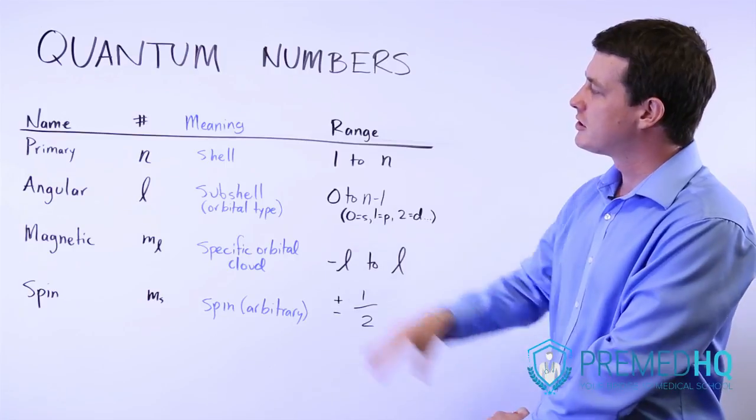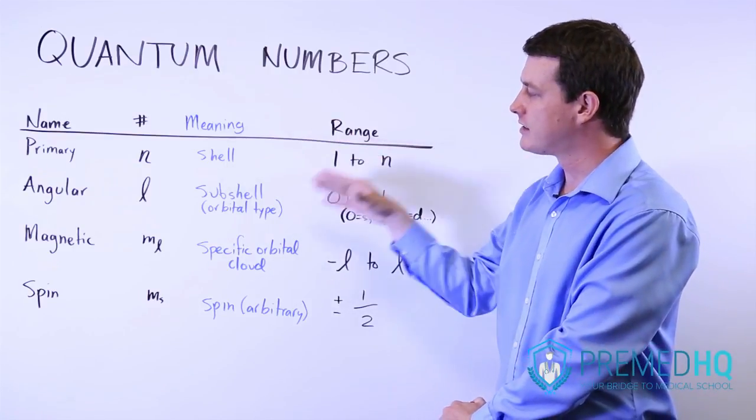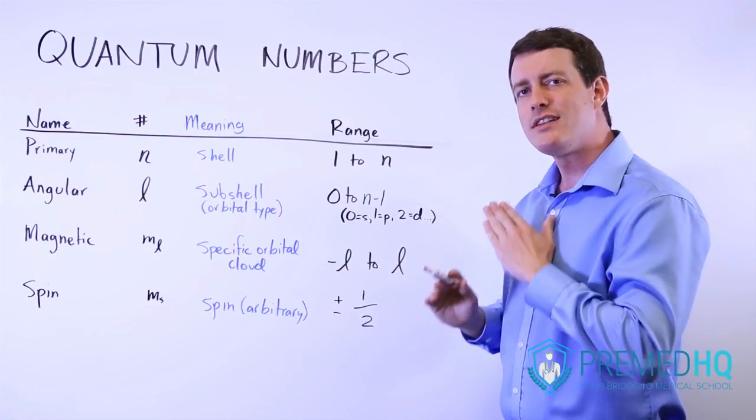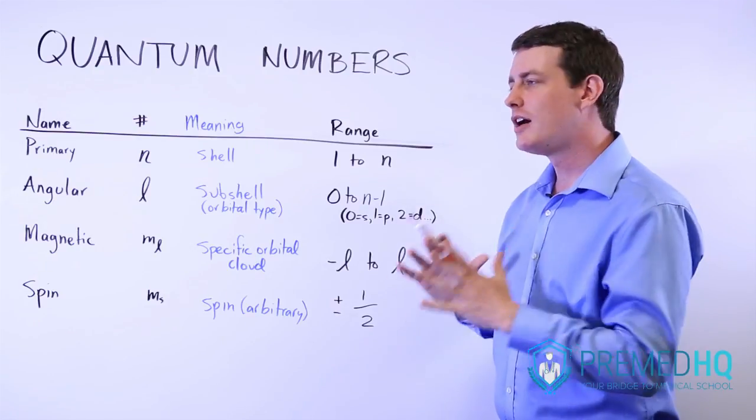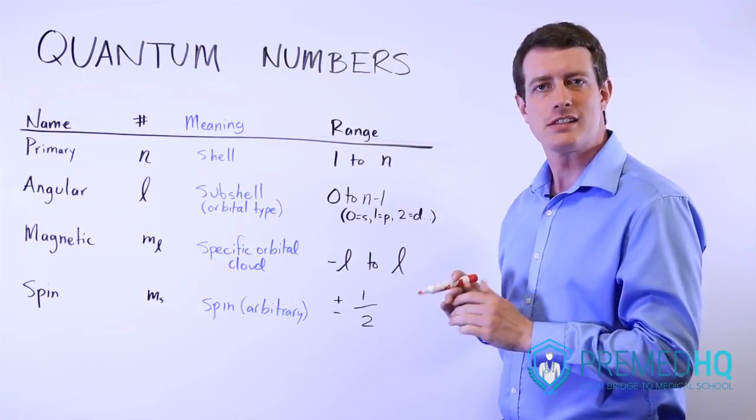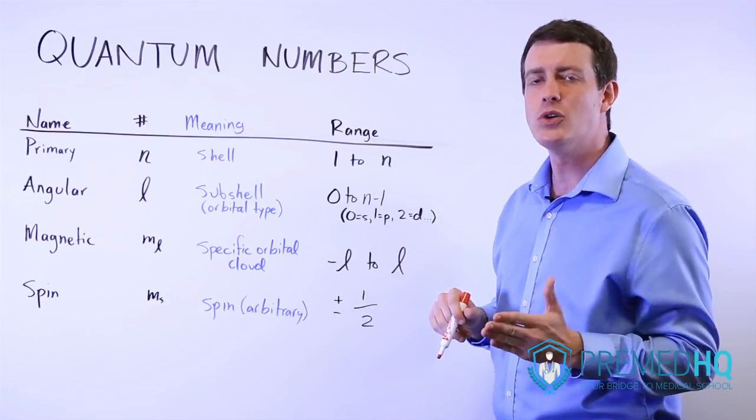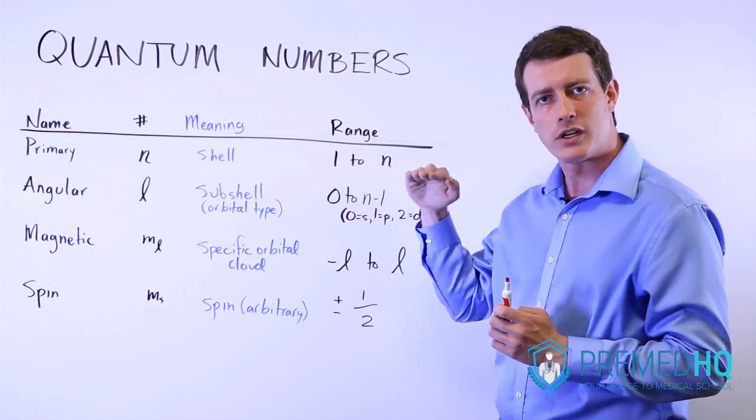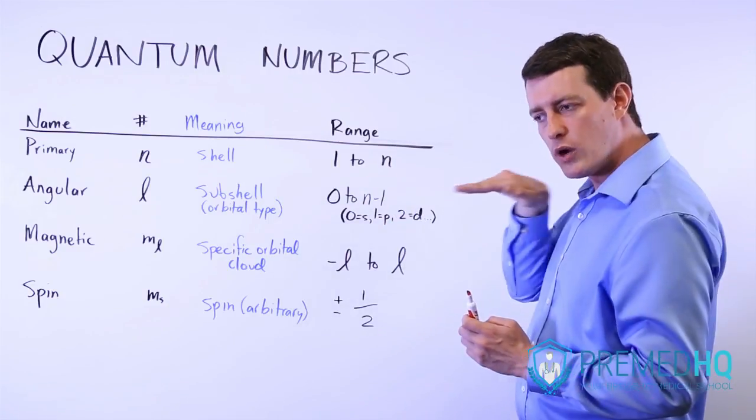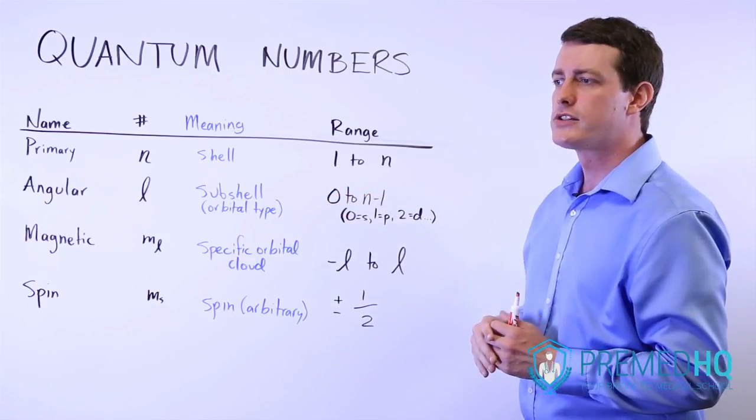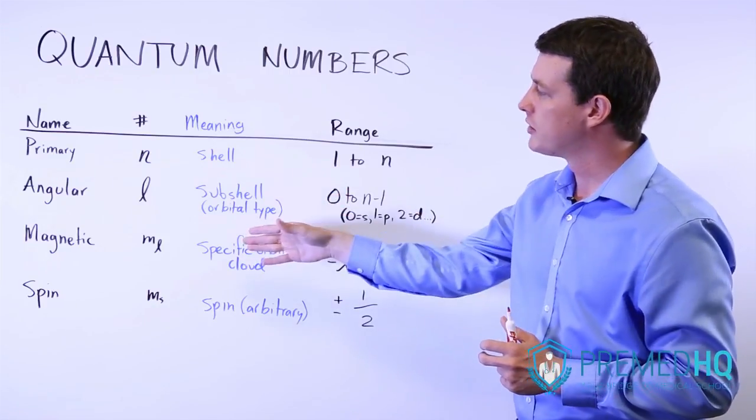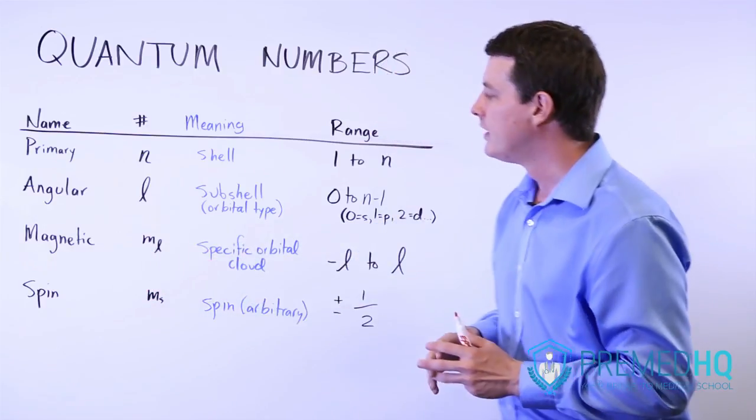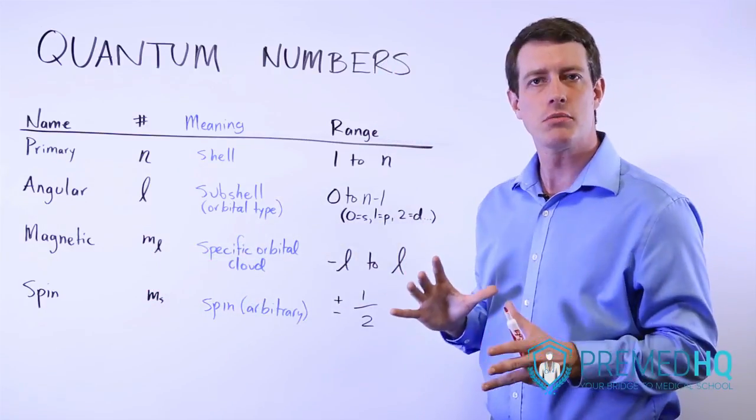Once we've established the shell and the subshell or the orbital type that it's in, our next job is to identify within that subshell which of the actual orbital clouds is it in. Recall that the p orbital has three different clouds. One is oriented like this, one is oriented toward you, and one is oriented in this direction. And so the third quantum number, the magnetic quantum number, which is represented as m sub l, tells you about the specific orbital cloud.